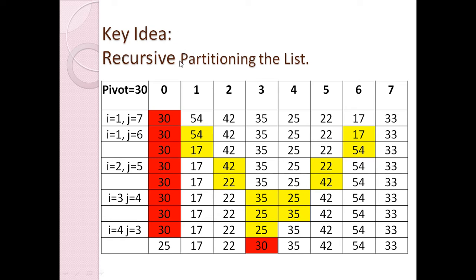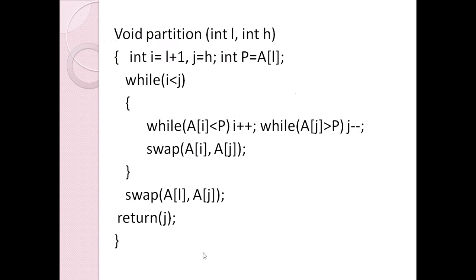The key idea behind QuickSort is recursive partitioning of the list. Our original problem from 0 to 7 is broken at index 3, giving two smaller problems: 0 to 2 and 4 to 7. We repeat the same partitioning process for each sub-problem. We keep doing this until there is a single element in each list, at which point the list is already sorted.